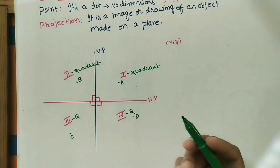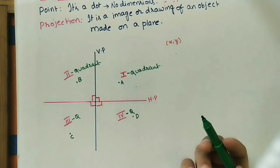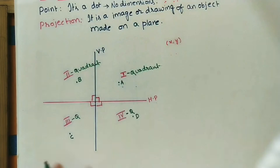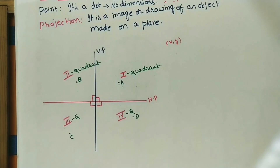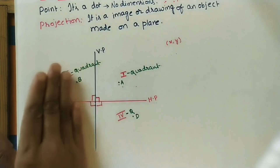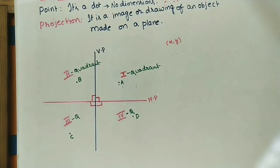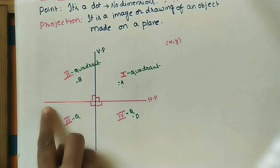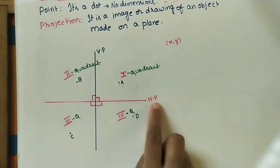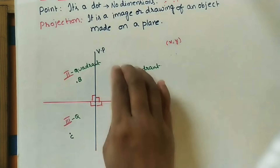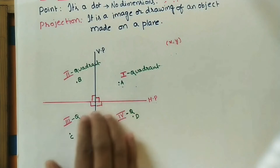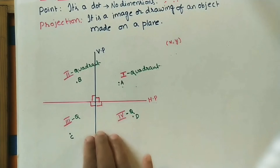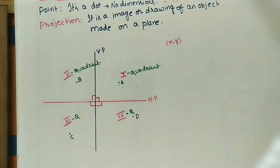Points coming this side are in front of VP; points coming the other side are behind VP. Similarly, points coming above the horizontal plane are above HP, and points coming below the horizontal plane are below HP.